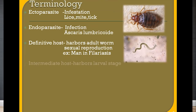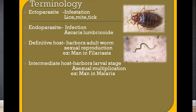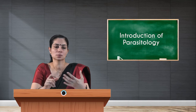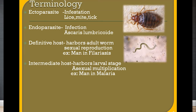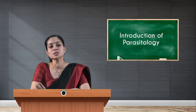The intermediate host harbors the lower stage of the parasite, where asexual multiplication can happen. For example, in malaria, man becomes the intermediate host, while mosquitoes are the definitive host. The malaria parasite completes its sexual reproduction in the definitive host — the female Anopheles mosquito — and its asexual reproduction in the intermediate host, which is man.